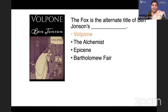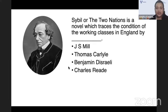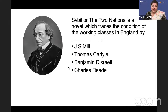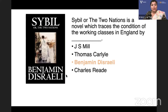Volpone is praying to gold like a god at the beginning. Next: Sybil, or The Two Nations is a novel which stresses the condition of the working class in England. Who wrote it — J.S. Mill, Thomas Carlyle, Benjamin Disraeli, or Charles Reed? Sybil is a condition-of-England novel, also known as an industrial novel. It is Benjamin Disraeli — the Jewish prime minister of England — who wrote Sybil, or The Two Nations. It's part of a trilogy.